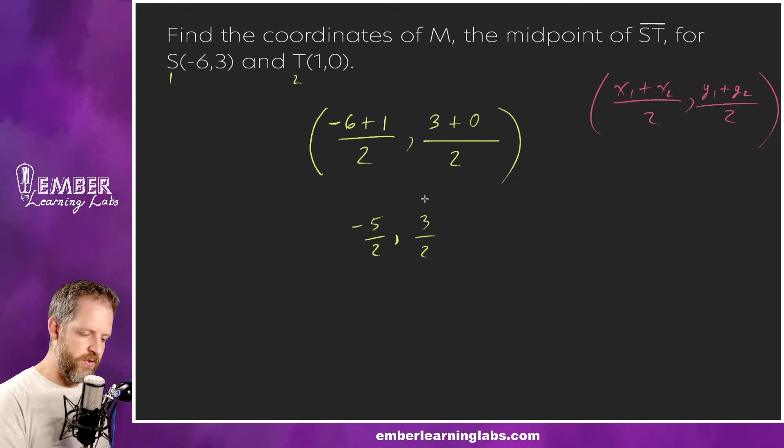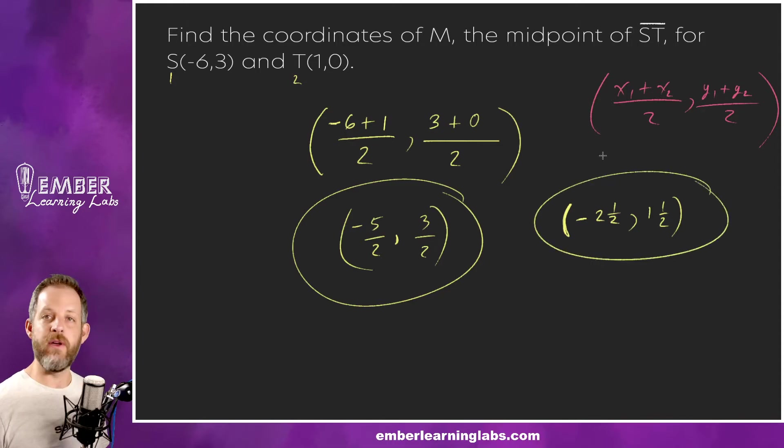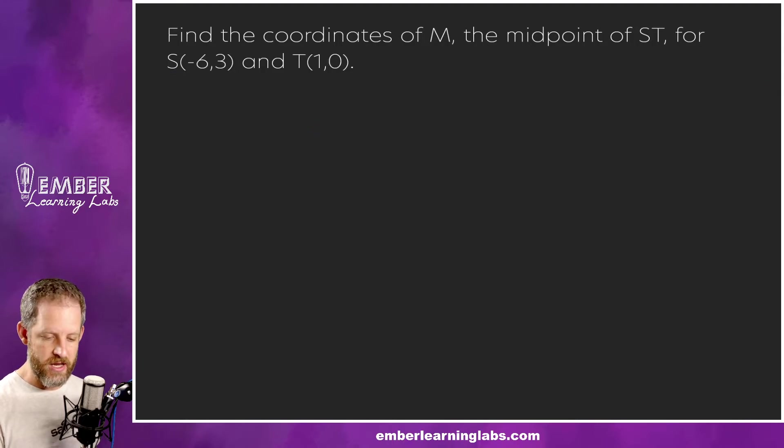So this in a lot of circumstances would be a perfectly acceptable answer. You could also get either a decimal equivalent or a fraction equivalent, or the mixed number equivalent. So in this case if we did that it would be negative two and a half and one and a half for the y part. So either one of those is probably quite an acceptable answer. I told you it was easy peasy, I wasn't lying.